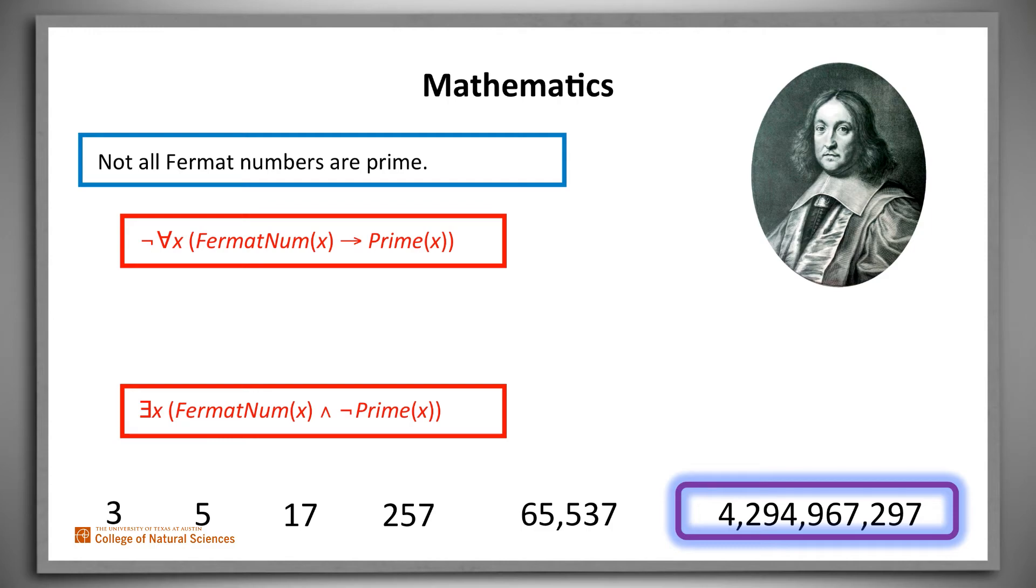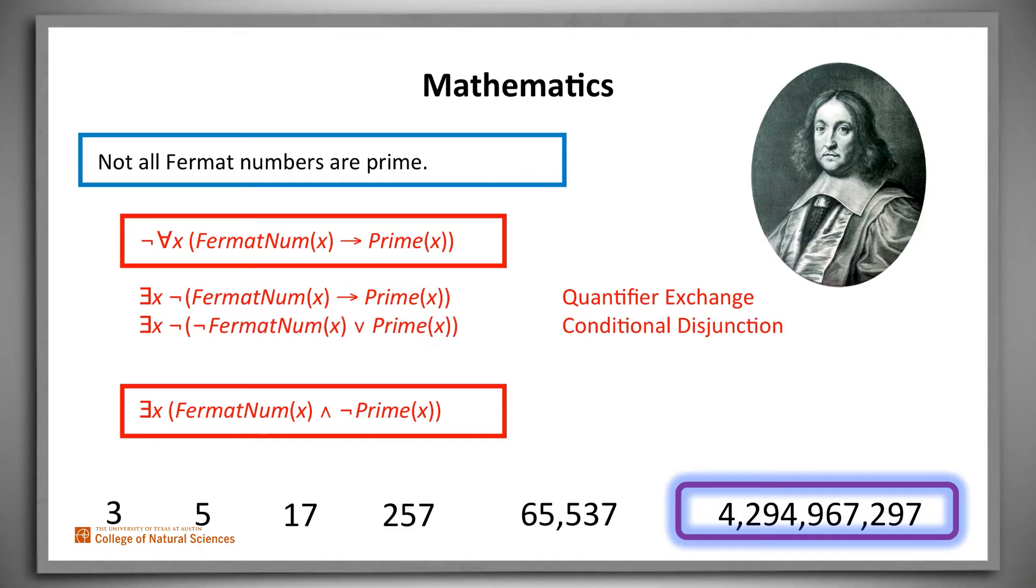Let's start with our initial claim. If we apply quantifier exchange, we get this. Then conditional disjunction gives us this. De Morgan gives us this. And finally, double negation gives us our alternative expression.